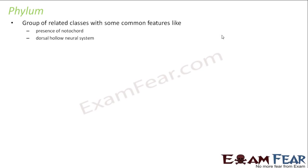Let us now talk about phylum. Group of related classes with some common features like presence of notochord and dorsal hollow neural system. Now you see the kind of similarities we are looking at — it is just that everybody has a notochord. Notochord means you can call it a vertebral column. It doesn't matter how that organism looks, where it lives, or what its food habits are. It is just the presence of notochord or the kind of neural system. If they all have a notochord and a similar type of neural system, they all fall under the same phylum.